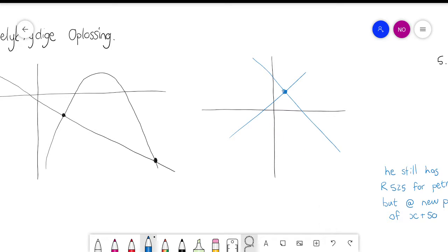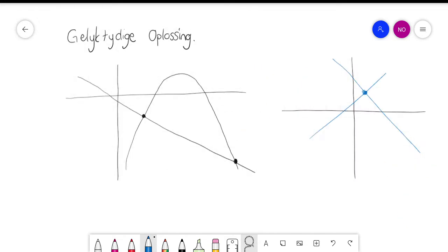This year, when we do it with quadratic equations and linear equations combined, do you see that you will have two solutions? So graphically, do you guys understand why you will have two solutions? Because my graphs cut each other twice.